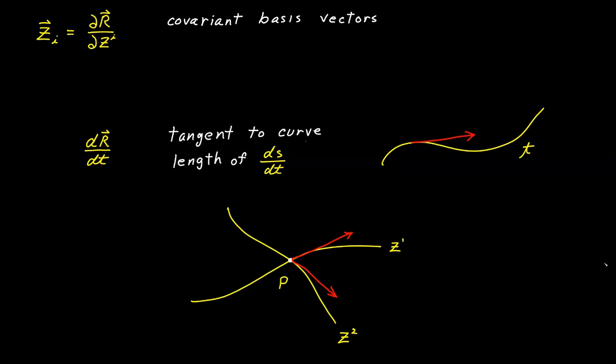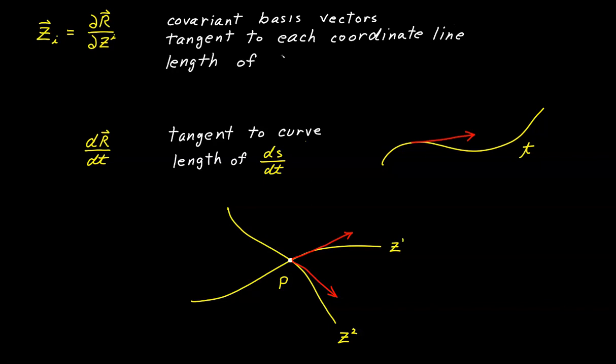The extension of this idea to higher dimensions is quite obvious. The partial derivative with respect to zi is going to be tangent to each coordinate line, and the length of each basis vector is going to be equal to ds/dzi. What we're going to discover is that almost all of the basis vectors we encounter fit into one of two special categories. Let's take the information we've discovered about basis vectors in general and see how it applies to each of those special cases.